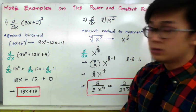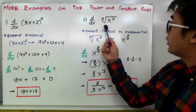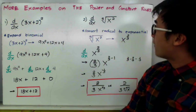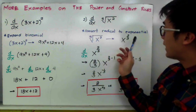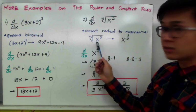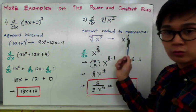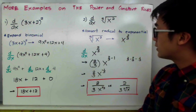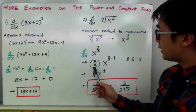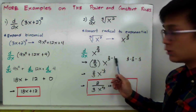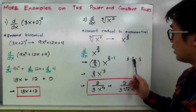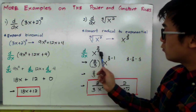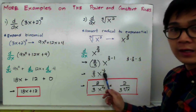For our second example, we have to find the derivative of the third root of x squared in terms of x. Since we have a radical function, we convert it into exponential form. So from the third root of x squared, this becomes x raised to 2 thirds. Using the power rule, we bring down our exponent: 2 over 3 times x raised to 2 thirds minus 1. Now 2 over 3 minus 1 equals negative 1 third. Therefore, the derivative of x raised to 2 thirds is 2 thirds times x raised to negative 1 third.